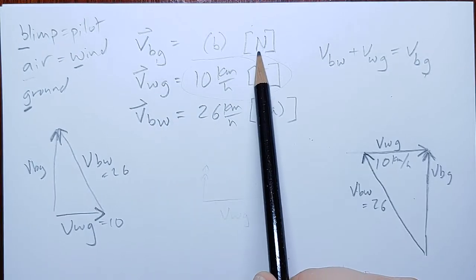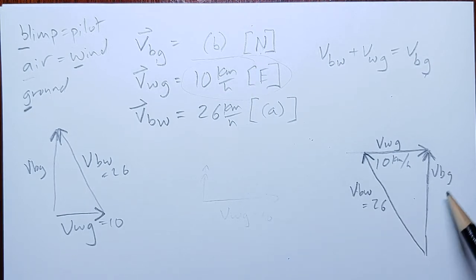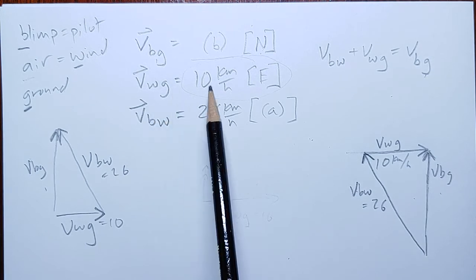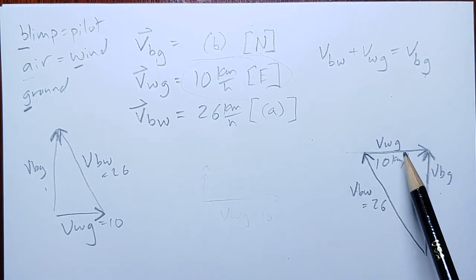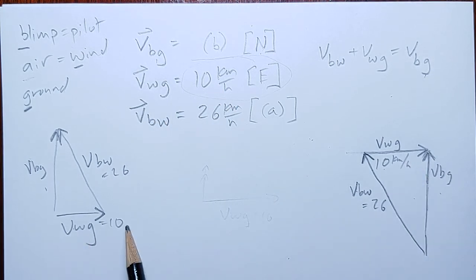So, vbg has to be pointing north. If I go find my vbg, it is pointing north, both versions. Good. vwg is 10 to the east. wg is 10 to the east, 10 to the east.